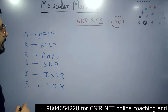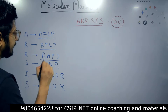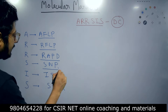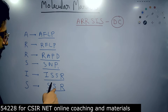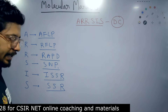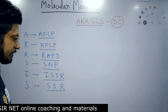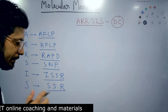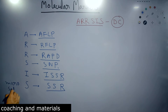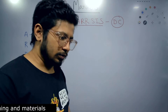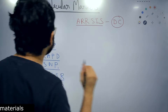A is for AFLP — Amplified Fragment Length Polymorphism. R is for RFLP — Restriction Fragment Length Polymorphism. R is for RAPD — Random Amplified Polymorphic DNA. S is for SNP — Single Nucleotide Polymorphism. I is for ISSR — Interspersed Simple Sequence Repeat. And the last S is for SSR — Simple Sequence Repeats, also known as microsatellites. So SSR is also known as microsatellites — remember that.